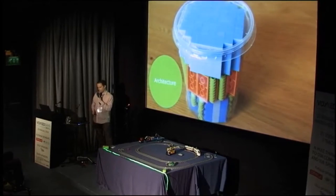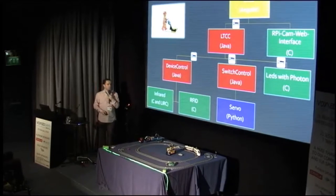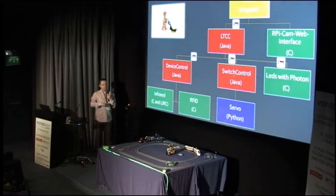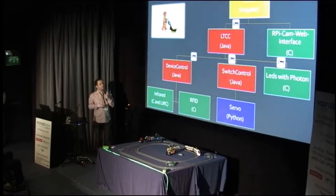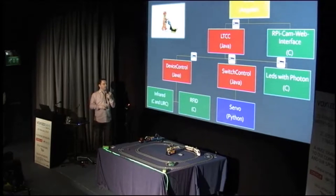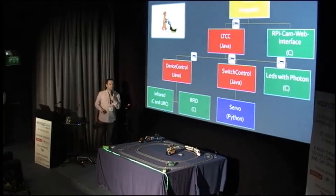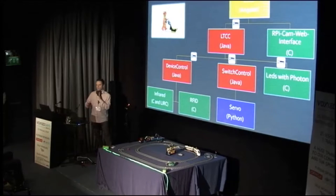When we started, we built the entire thing with Java applications. We had an Angular front end with a REST interface for the Java backend running on our laptop, and another application running on the Raspberry Pi on the train, with a third one for the switches. We just did REST calls between those applications to make the train start moving or the switch change. For low-level hardware work we still used C or Python libraries, with Java as an integration layer, so we didn't have to write everything ourselves.